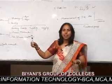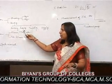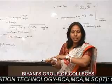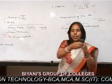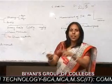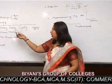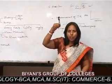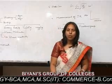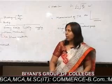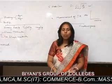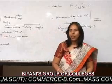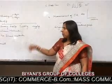Scissoring vibration is like scissors moving. Rocking vibration is when both particles move to one side and then back repeatedly. Twisting vibration is when one part goes up and another goes down alternately. Wagging vibration is when both parts go up and then both go down together.